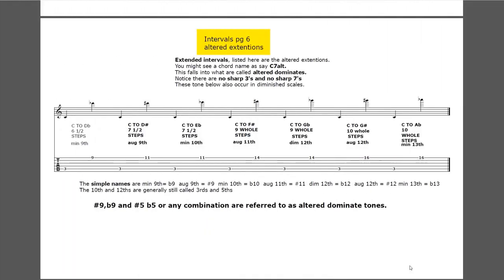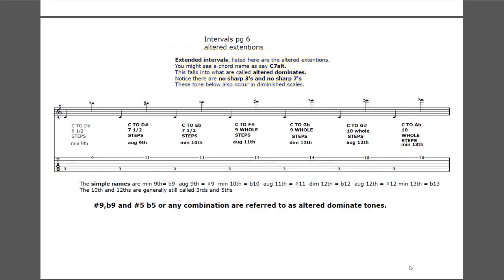Intervals page six - altered extensions. Extended intervals listed here are the altered extensions. You might see a chord name like C7 alt or D13 sharp eleven - this falls into what are called altered dominants. Notice that there's no sharp threes and no sharp sevens. The tones below also occur in diminished scales. C to D-flat, six and a half steps, is called a minor ninth. C to D-sharp, seven and a half steps, is called an augmented ninth.